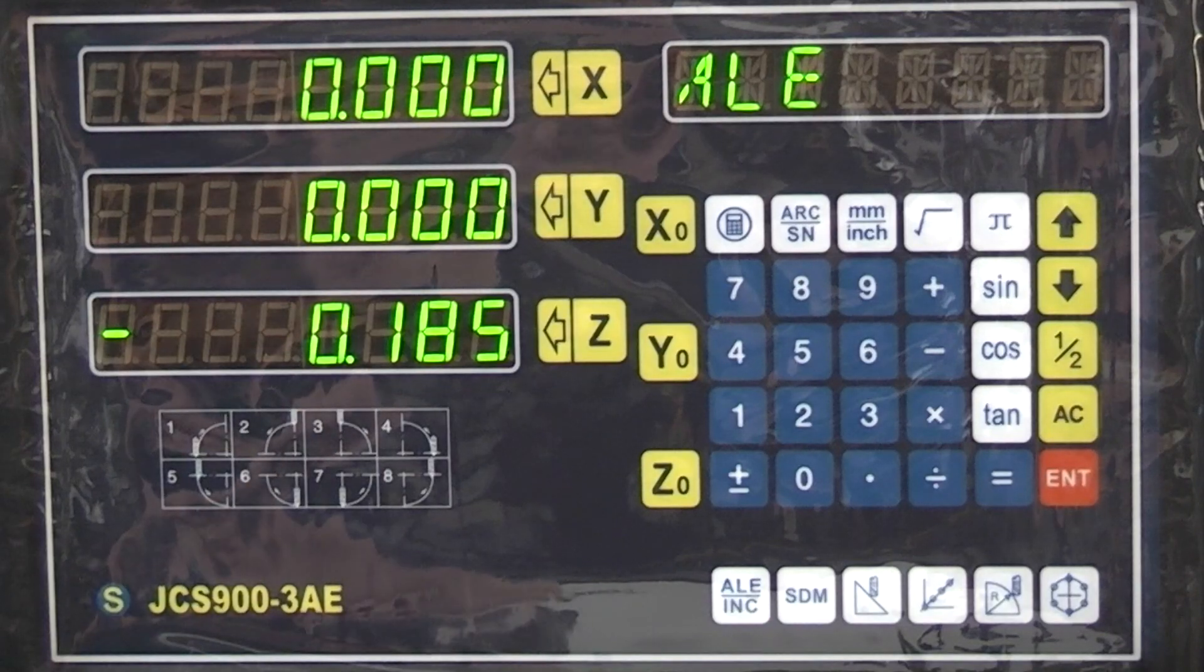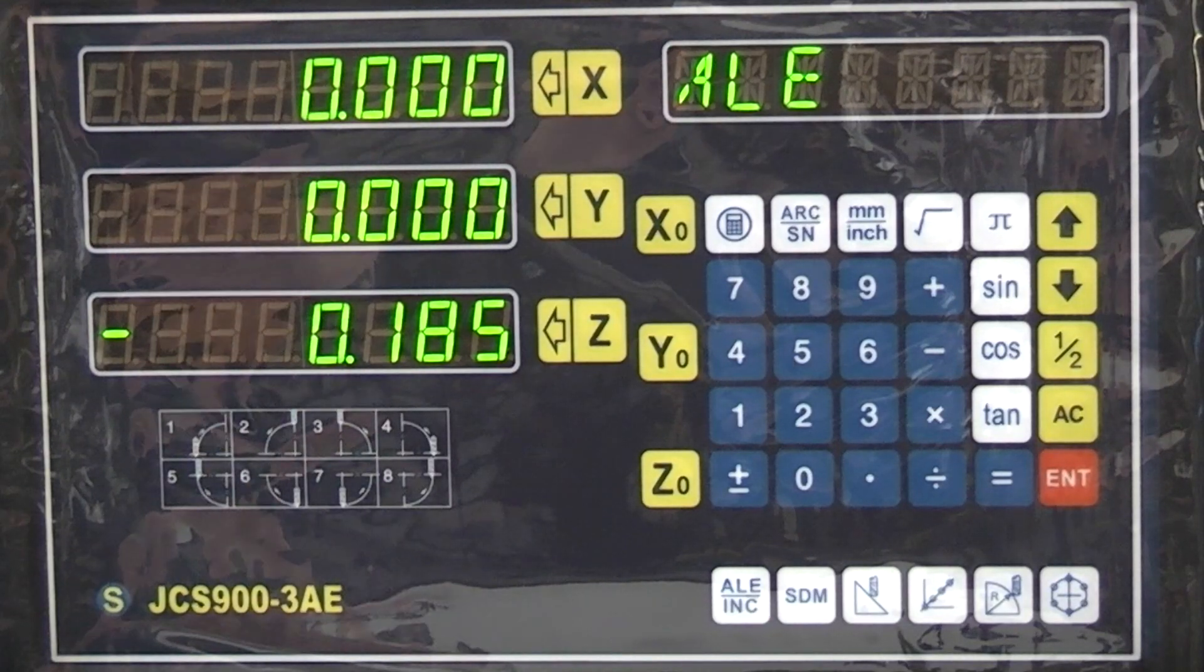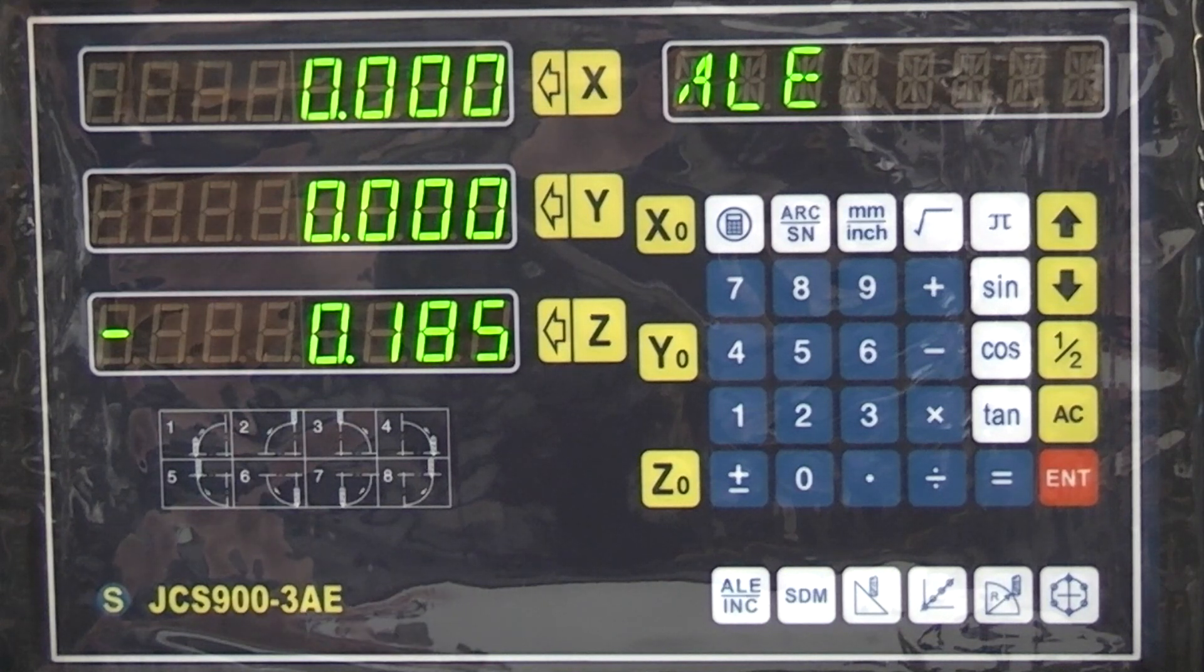So why fit DRO? Well it turns your machine into a measuring machine. The scales are independent of the lead screw so it gives you a direct reading of the table or saddle or cross slide position and movement. No more backlash to consider. So let's go into the workshop and see how we do it.